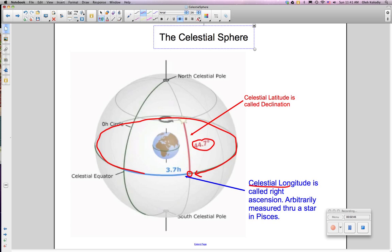Celestial longitude is called right ascension. And arbitrarily, we use a star through Pisces, the constellation Pisces, as our reference point.